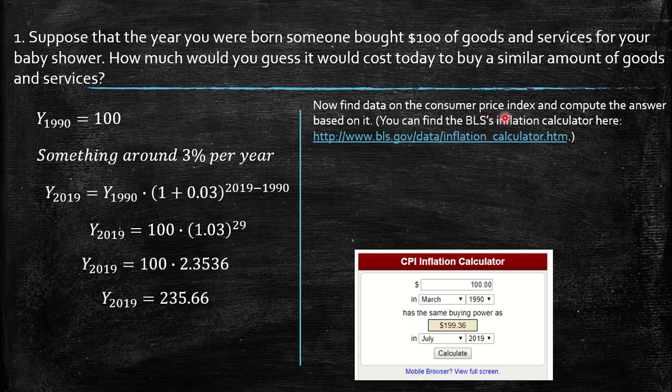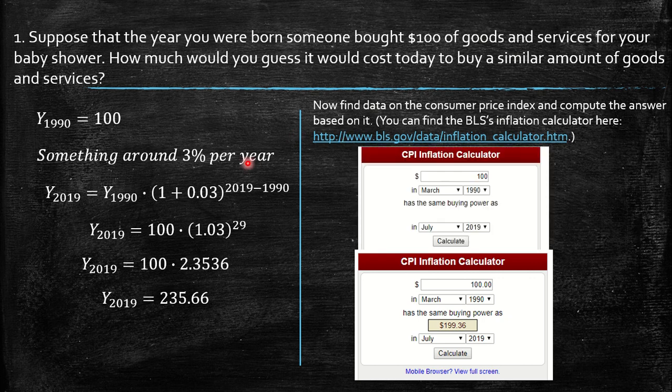Now find the data on the consumer price index and compute the answer based on it. So you can find the BLS inflation calculator here. So you just need to click on this and then you will find this square. So you just need to put the value 100 and the time of your year and month. So my case, March 1990, and now in July 2019, and calculate. When you click on calculate you get this one, that 100 dollars in the time you were born is exactly the same quantity as 199.36 dollars.